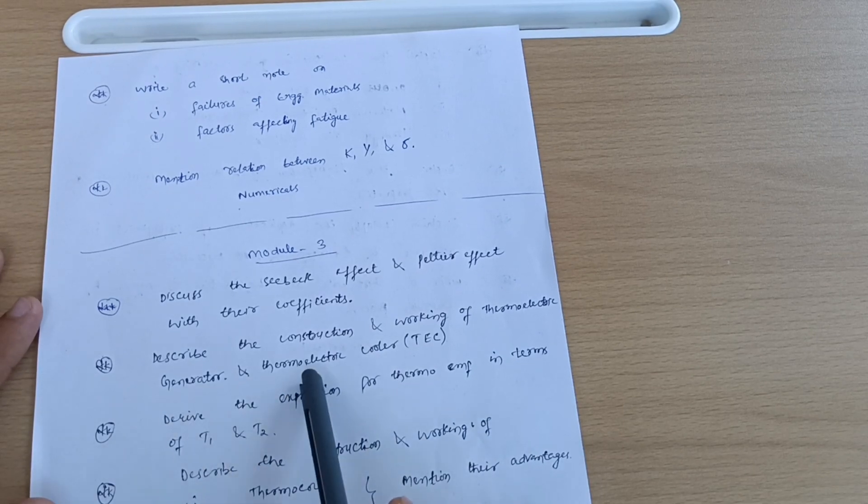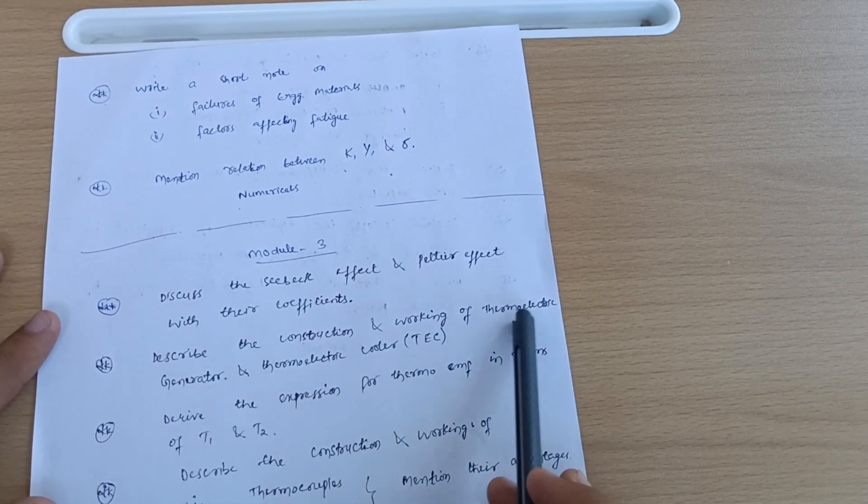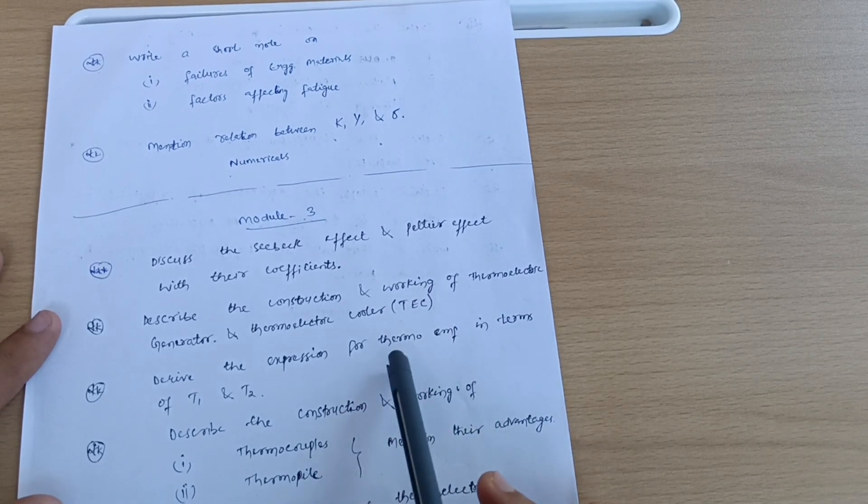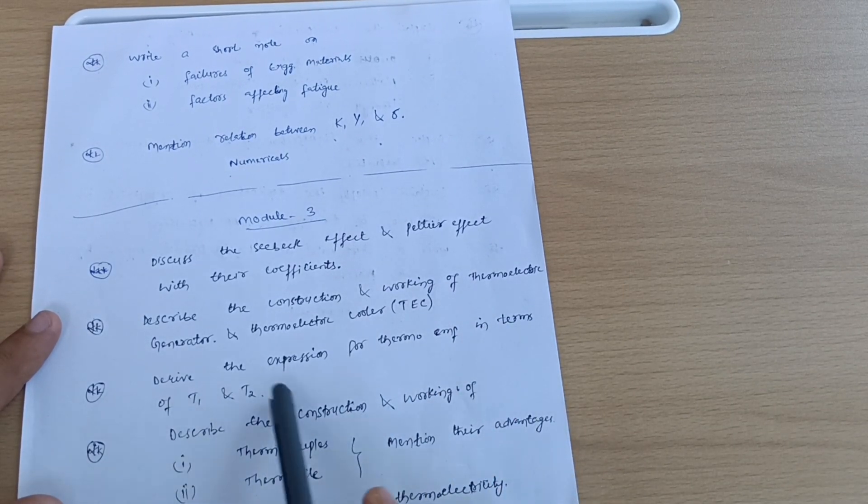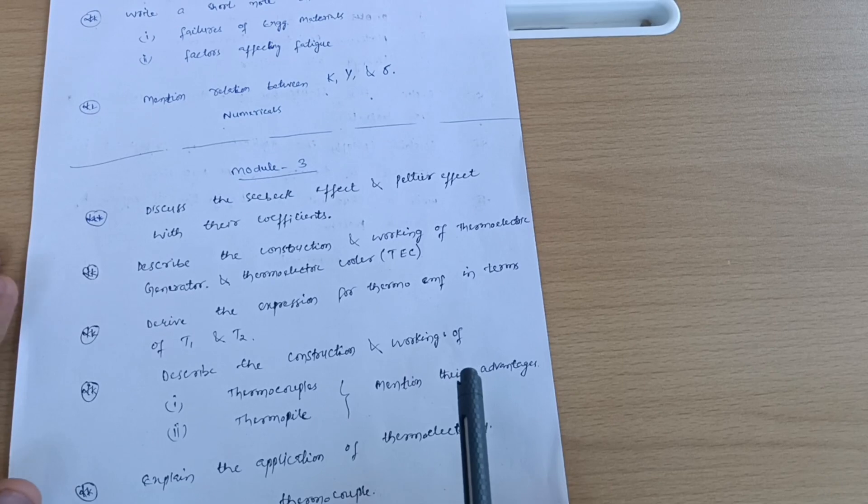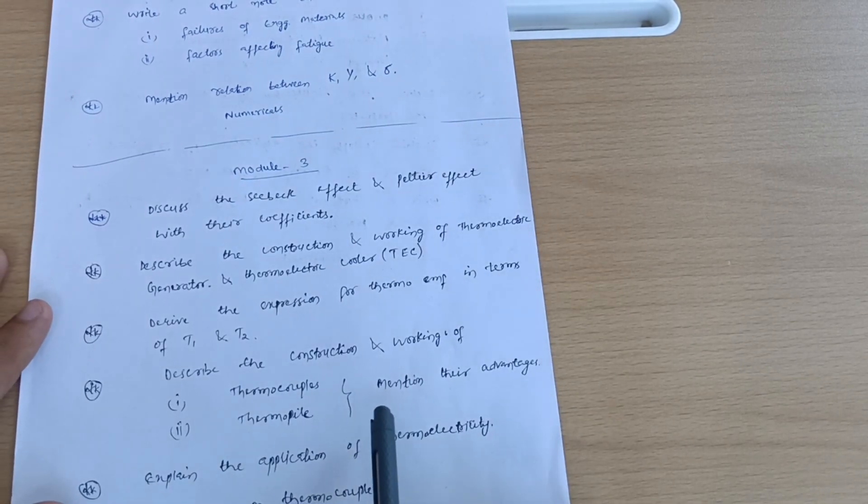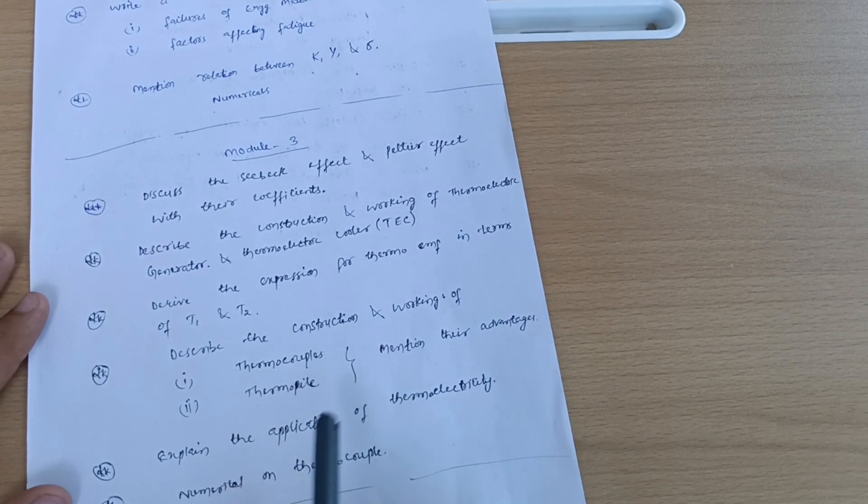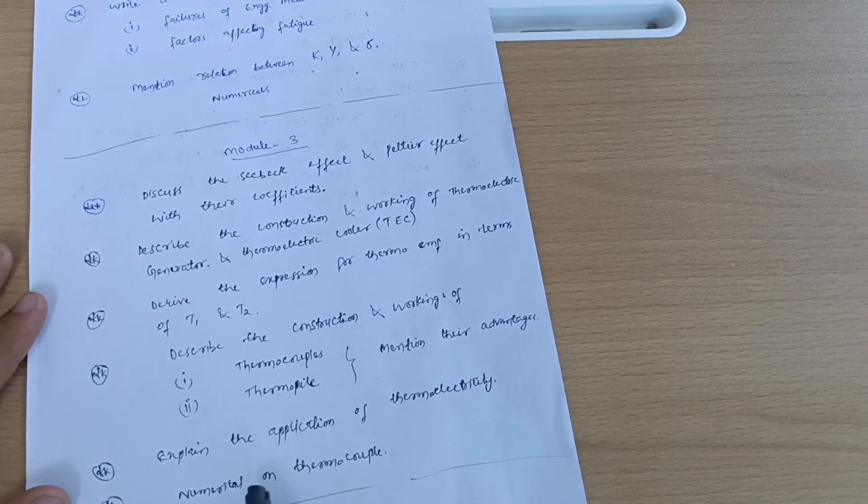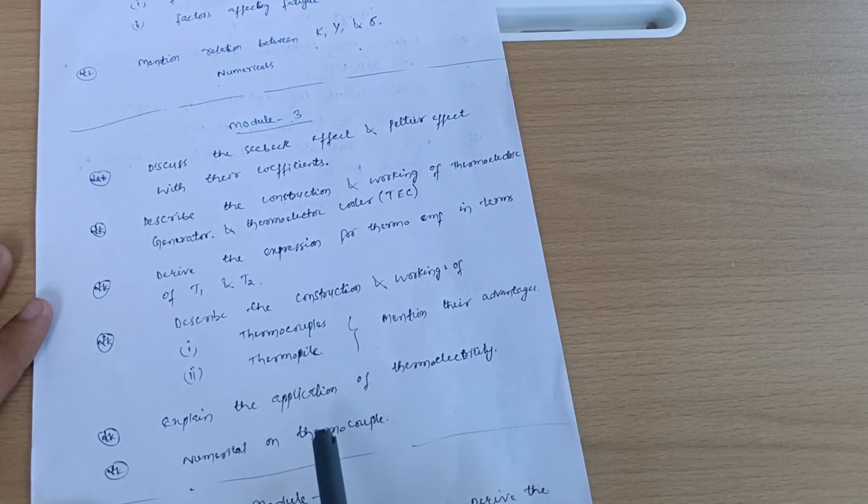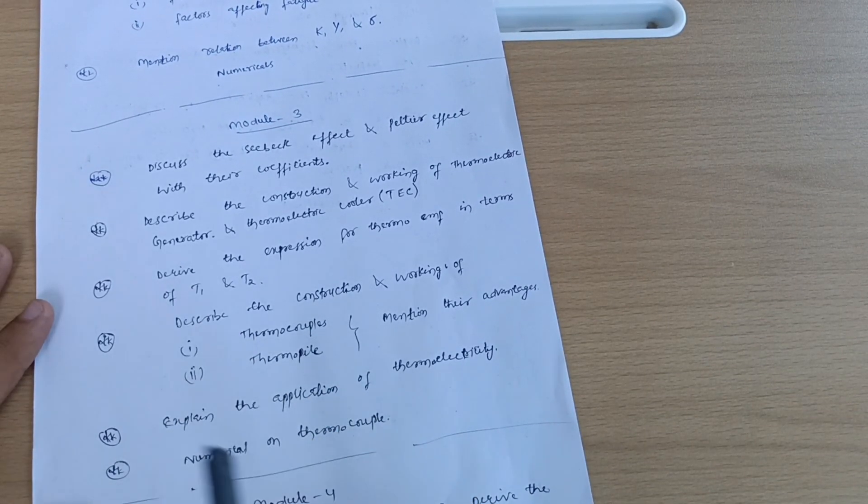Module 3: discuss the Seebeck effect and Peltier effect with their coefficients. Describe the construction and working of thermoelectric generator and thermoelectric cooler (TEG and TEC). Derive the expression for thermo EMF in terms of T1 and T2. Describe the construction and working of thermocouples and thermopile and also mention their advantages - sometimes they will mention four advantages, but you should go through five to six advantages. Explain the application of thermoelectricity and numericals on thermocouple are there in both the parts. This much is enough for Module 3.